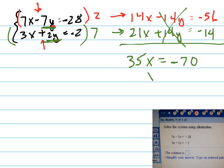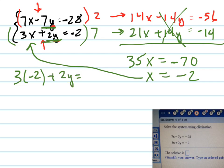Which is nice, because that's a nice number. When I divide by 35 I'm going to get negative 2. And now I plug negative 2 back in for x into this bottom equation. You could have chosen the bottom or the top equation, it doesn't matter. So 3 times negative 2 plus 2y equals negative 2.